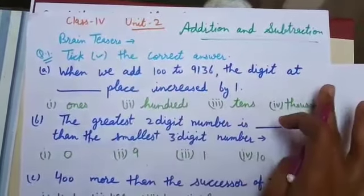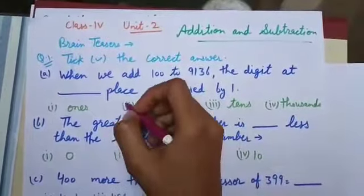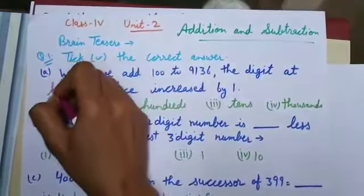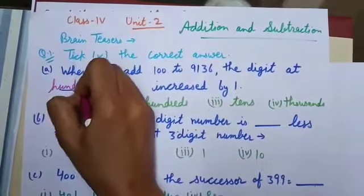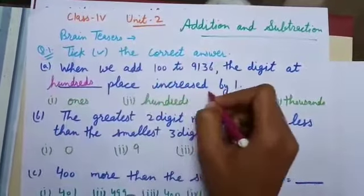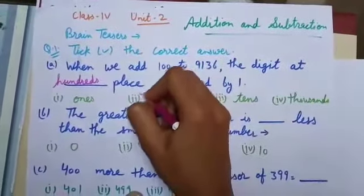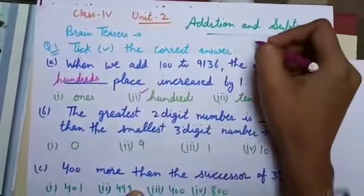It is clear that the digit at hundreds place increases by 1. Tick the correct answer. You can also cross-check your answer.